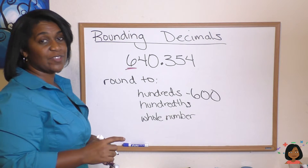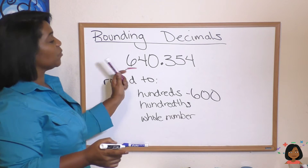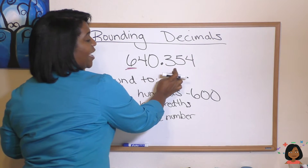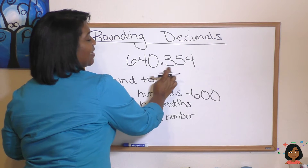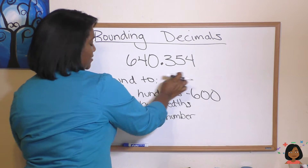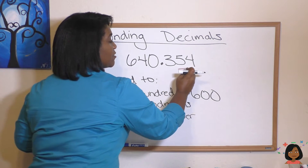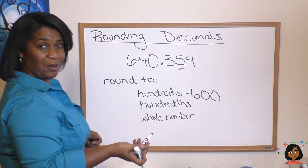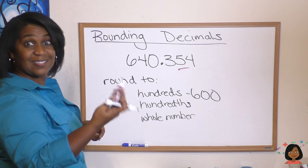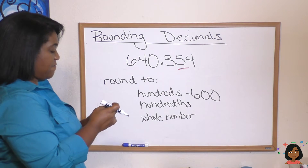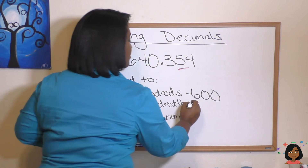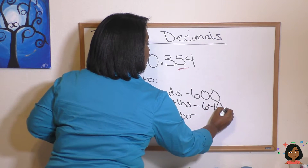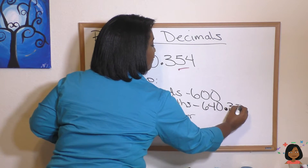Now let's round this to the hundredths, which means we're going to the decimal side. We know this is the tenths and the hundredths. So there's our 5. Let's look to the right — it's a 4, which means we get to keep our 5, because it's less than 5. So our hundredths is 640.35.